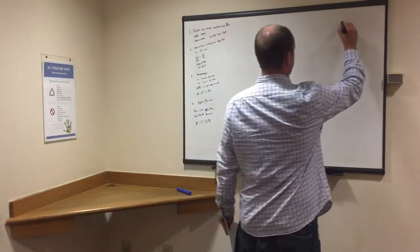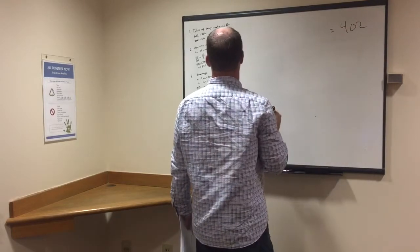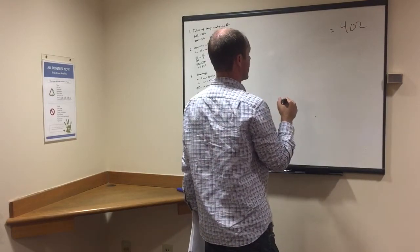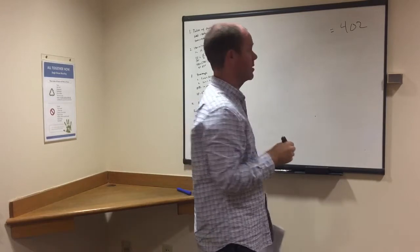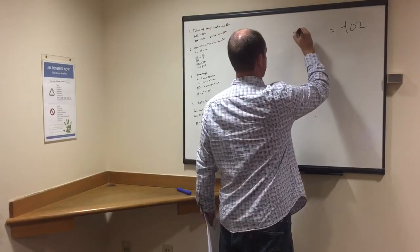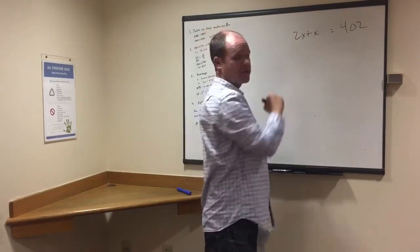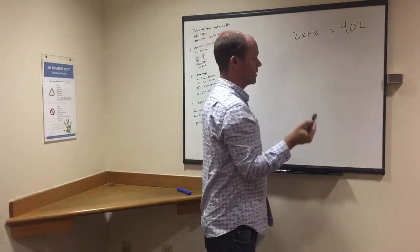So we start off, we know we have 402 total. And we're going to say twice as many females as males. So we want to have the same variable, so we have 2x plus x equals 402. The x represents the males, 2x represents the females.